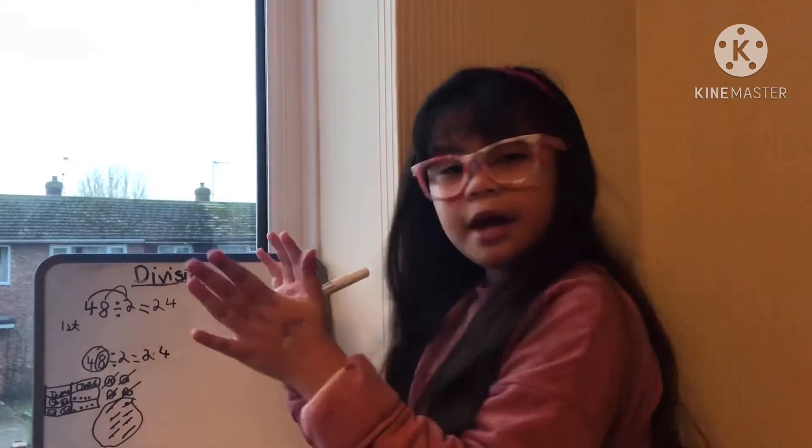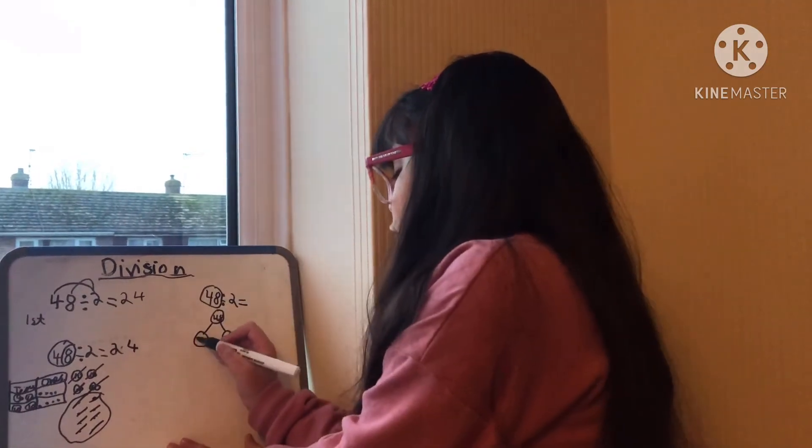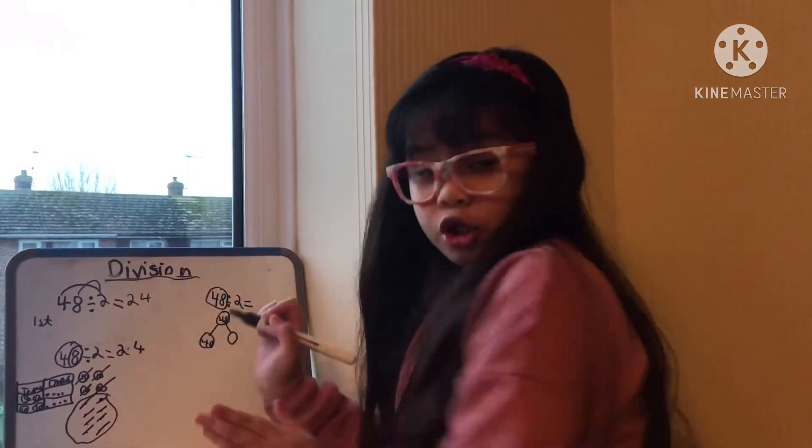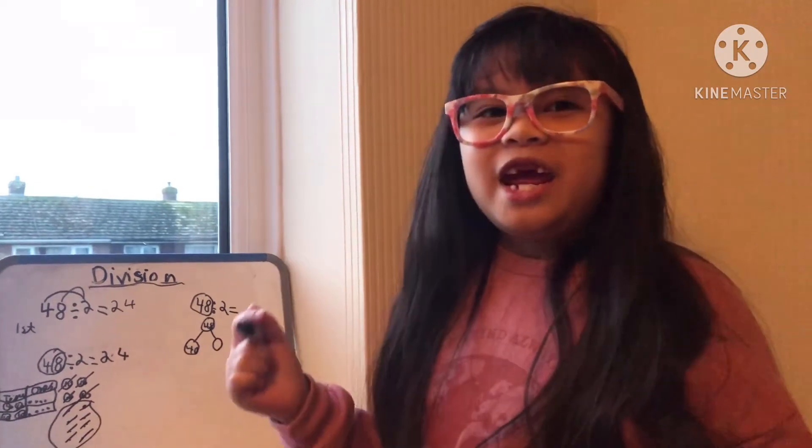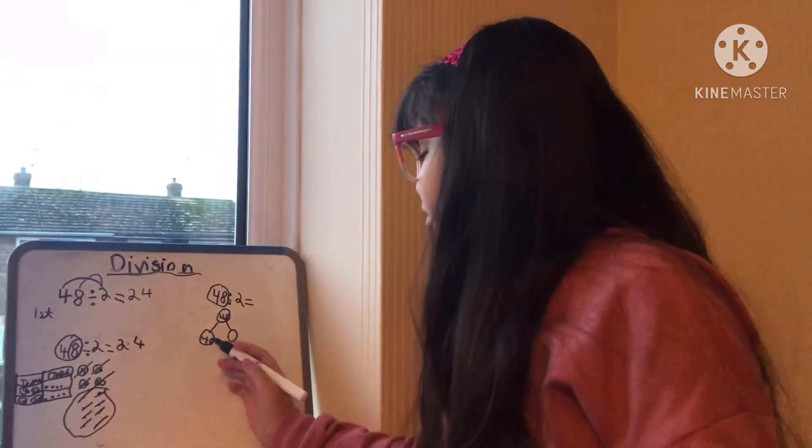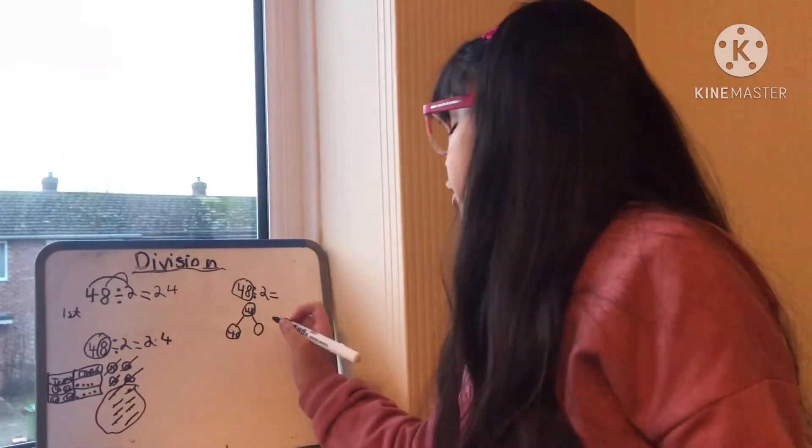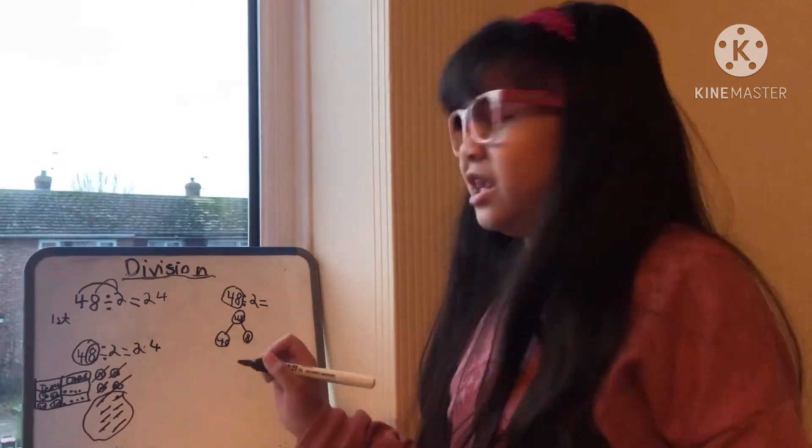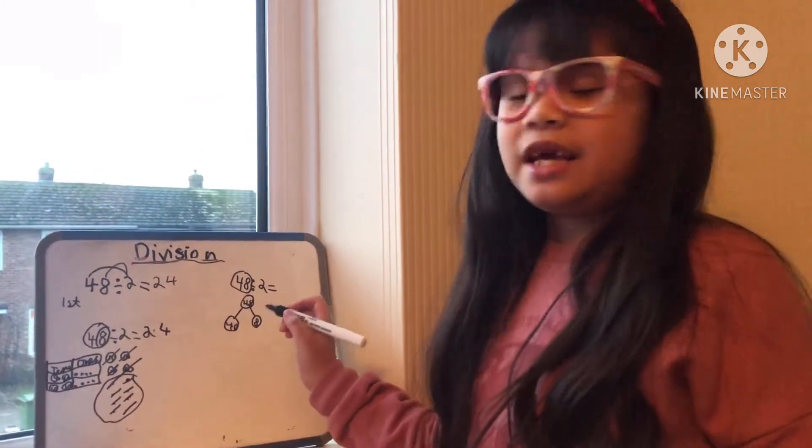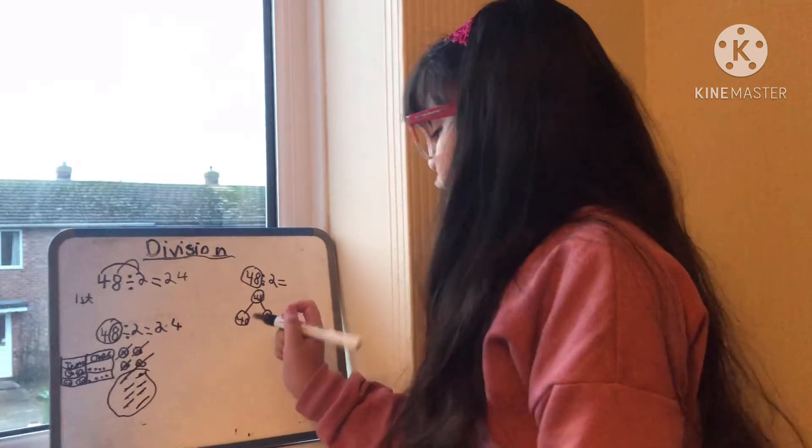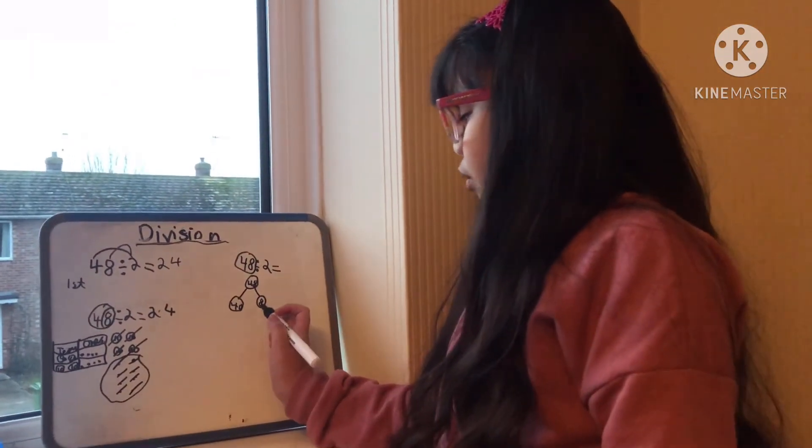And then we put 4 and 8 here. But do you know why? Because this is not an exchange. If it's an exchange we put 13 here and normally 18 in the ones column. Remember this is tens and ones.